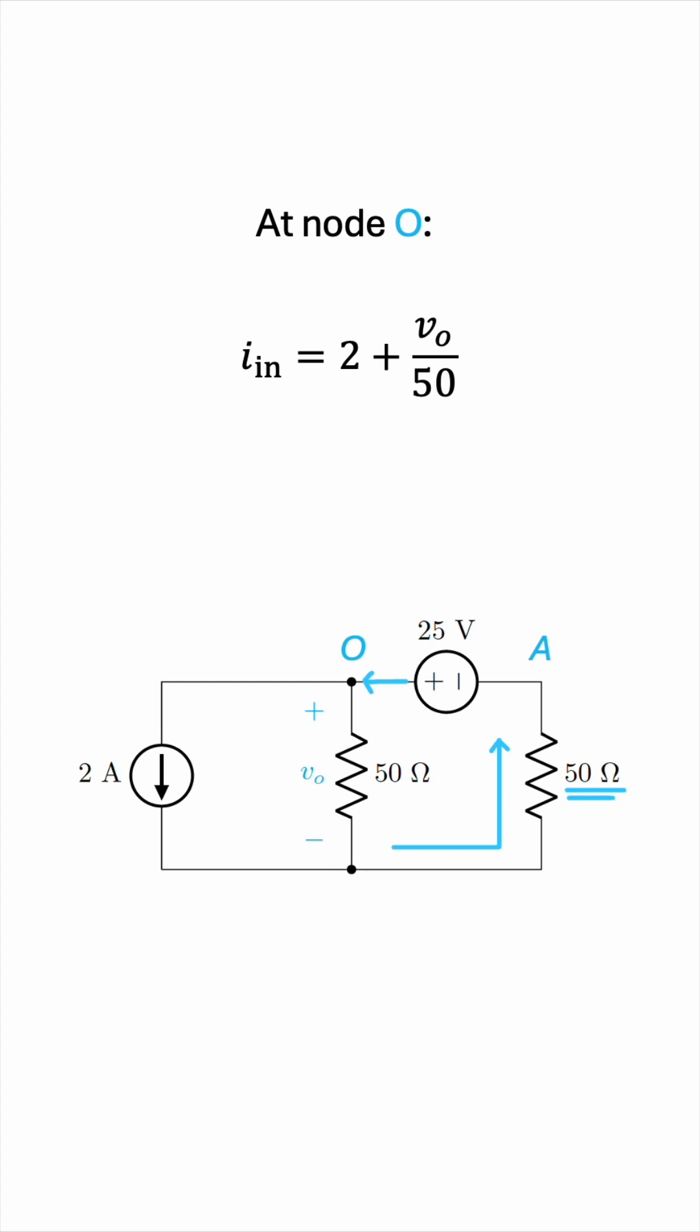So what is this current? It starts at the zero referential node, or what we call the reference node or ground, and it ends at node A. So the voltage across the 50 ohm resistor is zero minus va. And to find the current, we divide by the resistance, giving us zero minus va over 50.